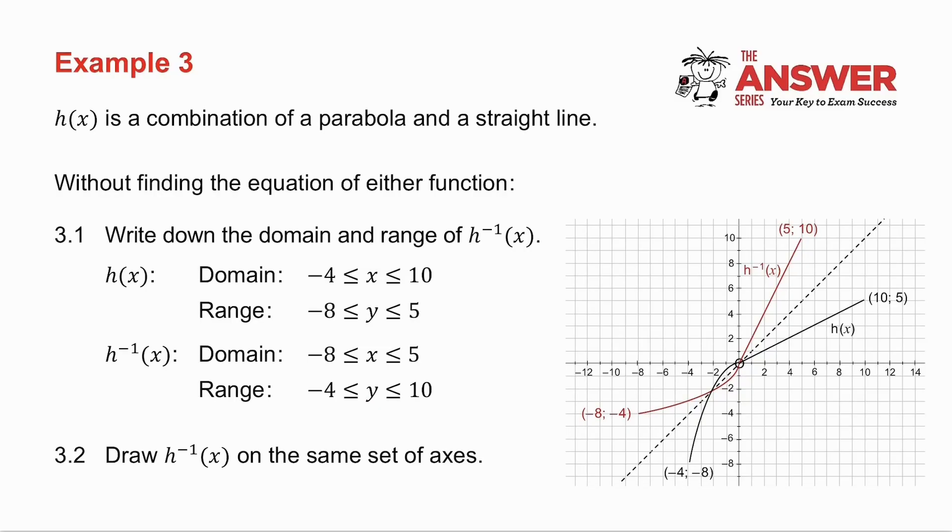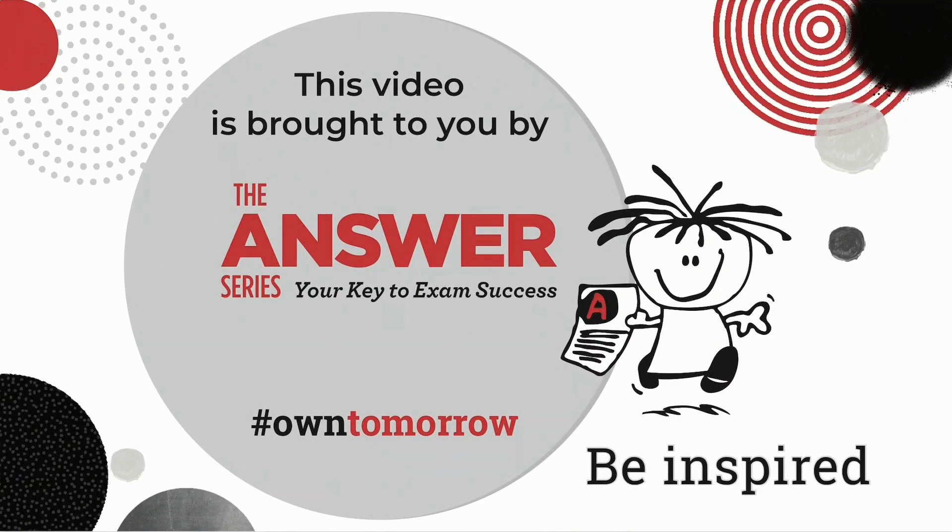So now they ask me to draw the inverse on the same set of axes. So what I have is the following. There's my original parabola. You should now be able to do an inverse of a parabola. And the end point is minus eight minus four. There's the straight line. So where's the inverse? It's there.